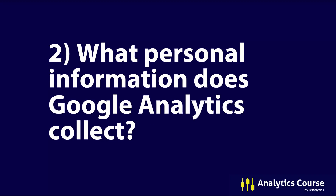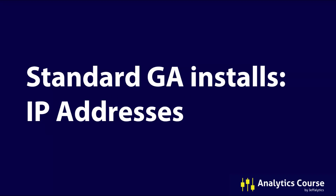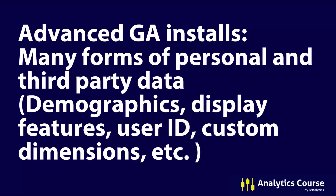What personal information does Google Analytics collect? In a standard Google Analytics installation, IP addresses are the personal data that Google Analytics collects every time someone uses it. Now if you have an advanced Google Analytics install, there are going to be many forms of personal and third-party data being collected — things like demographics, display features, user IDs, custom dimensions — basically a lot of your customizations to make Google Analytics centered around your users. Any customizations you do may add more personal data into Google Analytics.